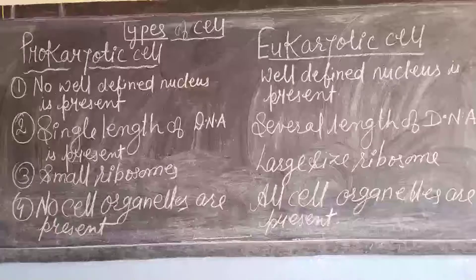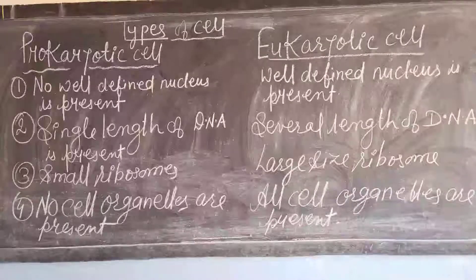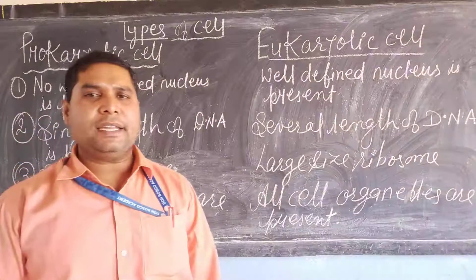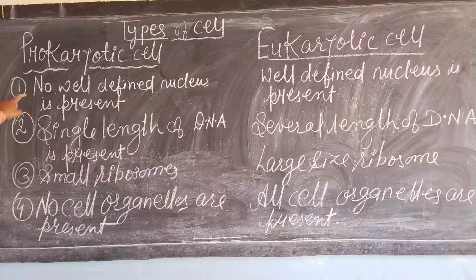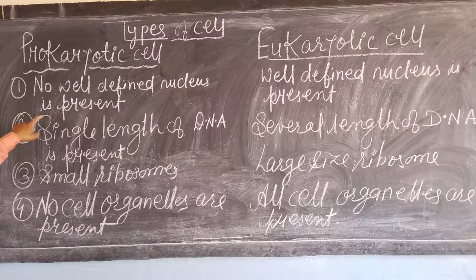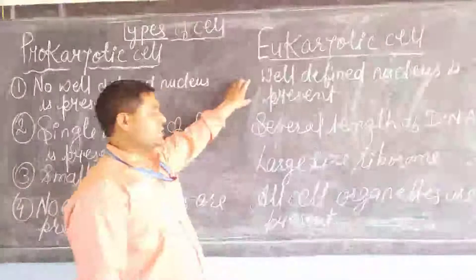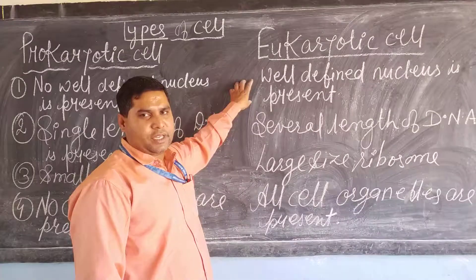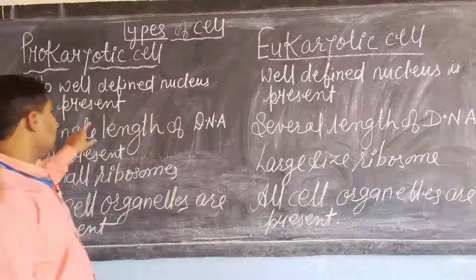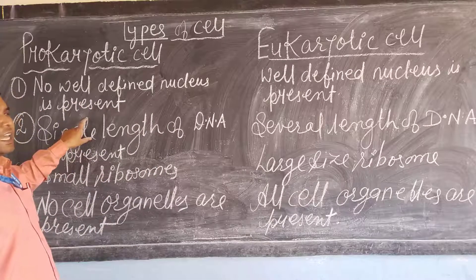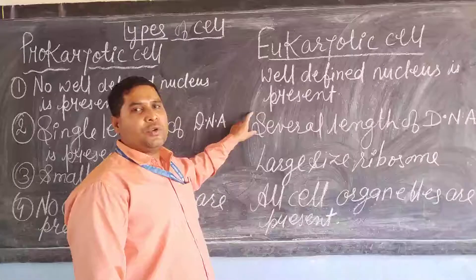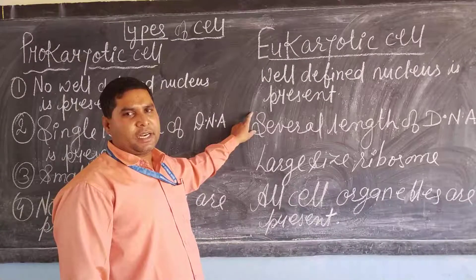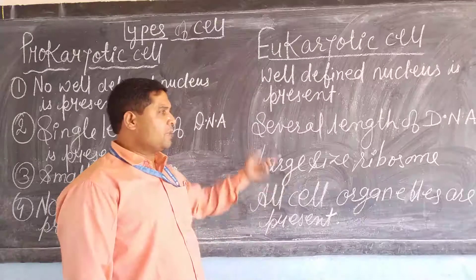So dear students, these are the few basic differences between prokaryotic and eukaryotic cells. No well defined nucleus is present in the prokaryotic cell, whereas a well defined nucleus is present in the eukaryotic cell. In the prokaryotic cell, single length of DNA is present, but in the eukaryotic cell, the double helix model or several folds of DNA length are present.